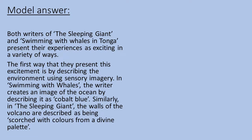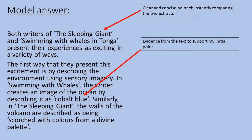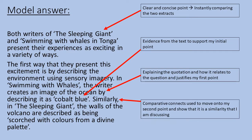Ok, so this is a model answer. Both writers of The Sleeping Giant and Swimming with Whales in Tonga present their experiences as exciting in a variety of ways. The first way they present this excitement is by describing the environment using sensory imagery. In Swimming with Whales, the writer creates an image of the ocean by describing it as 'cobalt blue.' Similarly, in The Sleeping Giant, the walls of the volcano are described as being 'scorched with colours from a divine palette.' We firstly have a clear and concise point comparing the two extracts, starting with the comparative connective 'both.' Then evidence from the text supports the initial point, explaining the quotation and how it relates to the question. Comparative connectives then move on to the second point, showing a similarity — so 'both' and 'similarly' make it really clear that this first point is all about talking about a similarity between the two texts.